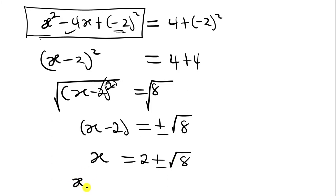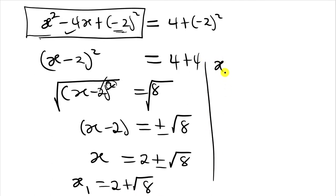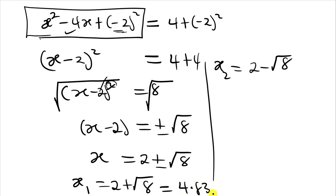Therefore, x₁ equals 2 plus the square root of 8, and x₂ equals 2 minus the square root of 8. The question wanted answers as decimals to two decimal places. So 2 plus the square root of 8 gives us 4.83, and 2 minus the square root of 8 gives us negative 0.83. That is how we solve this particular question. Thanks for your time. Bye-bye.